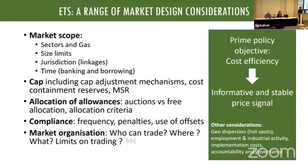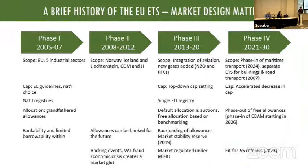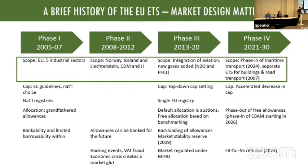I think the European carbon market is a very nice case study because at the beginning they felt that market design was not that important and then had to fix things. They work in phases — every phase has the same rules — and it's important to announce the rules of the game before each phase, observe what happens, and then fix things. The scope has been changing over time. It's very usual in many markets that you start small, experiment, and then expand — and this has happened with more countries, more gases, and more sectors.